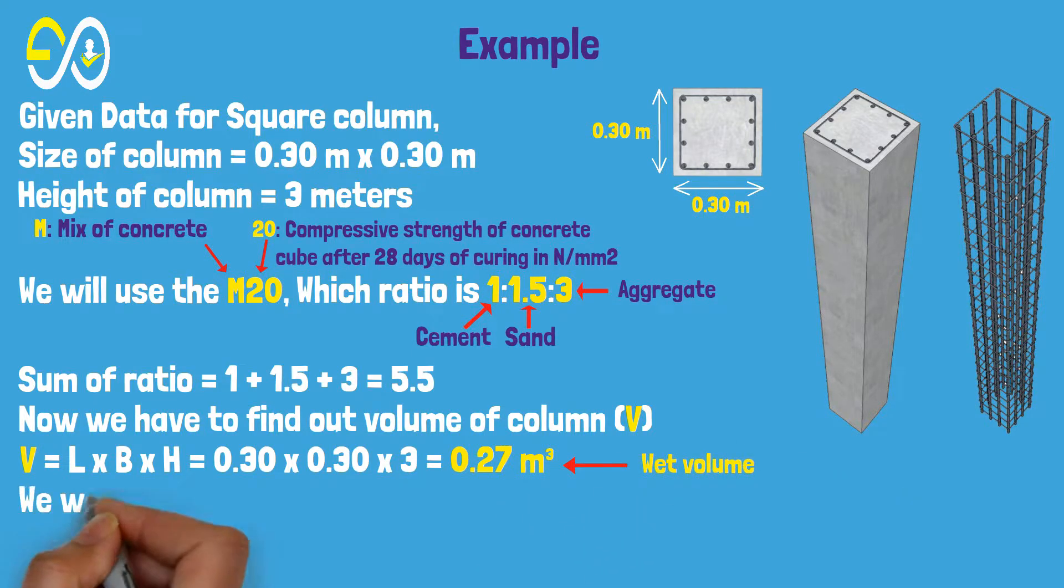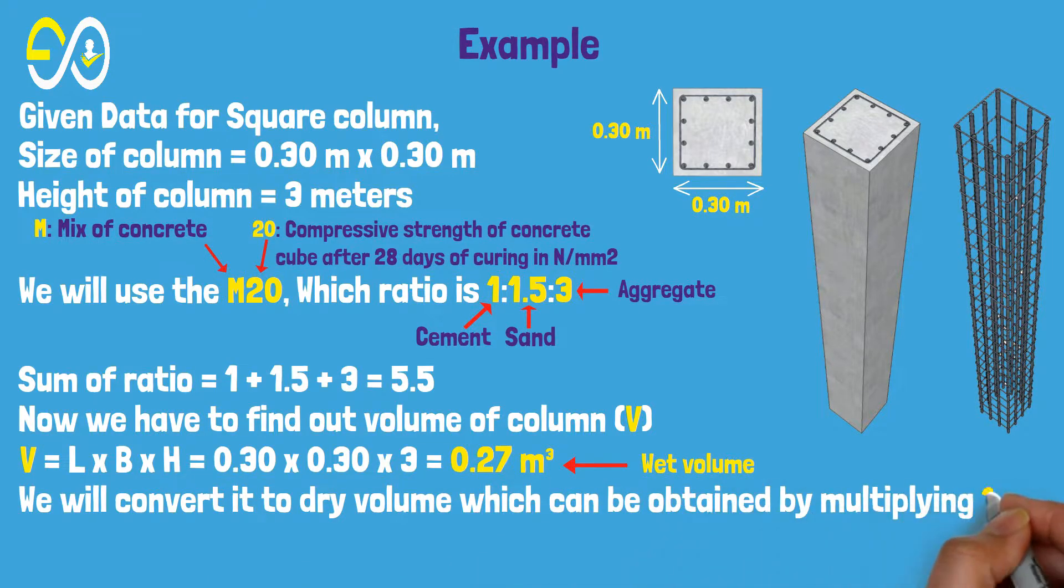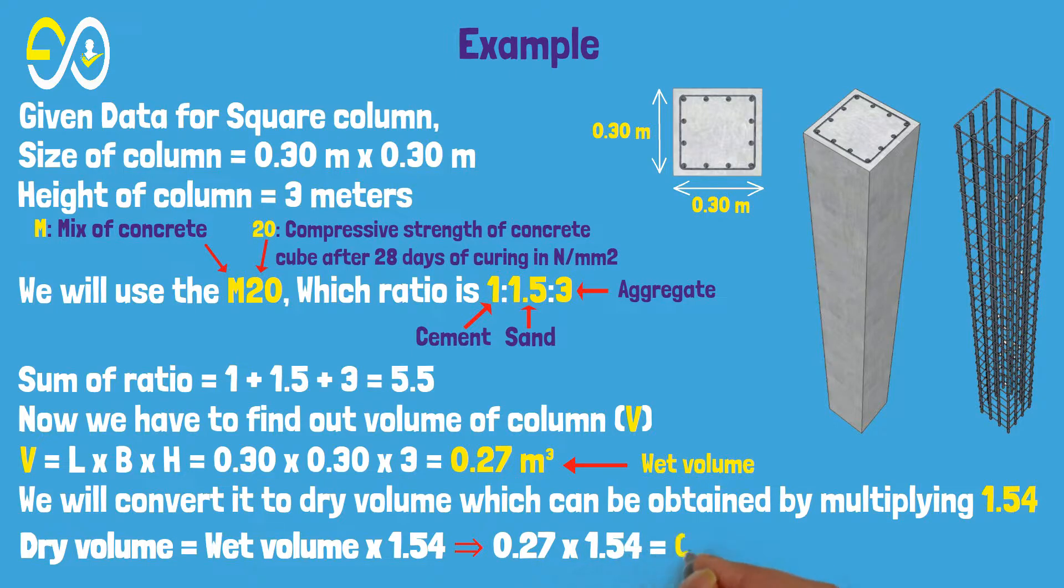We will convert it to dry volume, which can be obtained by multiplying by 1.54. Dry volume equals wet volume times 1.54 equals 0.27 times 1.54 equals 0.4158 cubic meters.